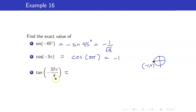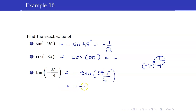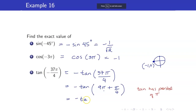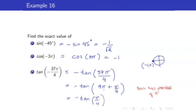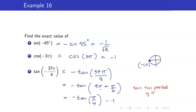For tangent(-37π/4): tangent is odd, so this equals -tangent(37π/4). Write 37π/4 as 9π + π/4. Since tangent has period π, discard the 9π, giving -tangent(π/4) = -1.